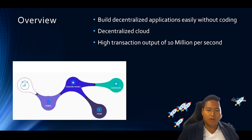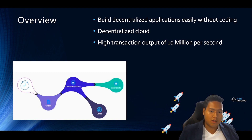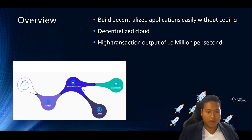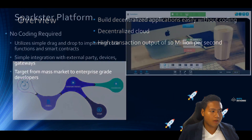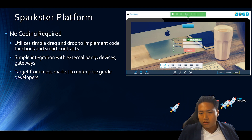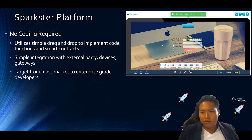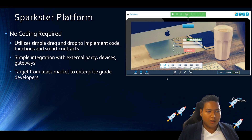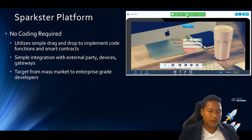The platform will be built on their own decentralized cloud and they boast a high transaction output of 10 million per second. You can see from the chart this is one of the ways they implement their coding, which is to use blobs — you are able to connect different functions together using blobs. Here we have the Sparkster platform, which is pretty similar to drag-and-drop tools like Shopify, where you can just drag and drop and edit right on the interface itself. No coding required, utilizing simple drag and drop to implement code functions and smart contracts.